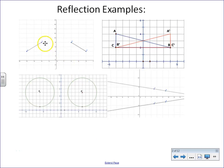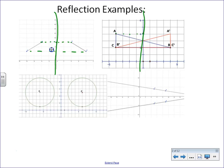Here are some examples of reflections. In the first example, we are reflecting across the y-axis. The points are equidistant from the y-axis. In the second example, we're also reflecting across the y-axis. Point A is 4 units from the y-axis, and A prime is also 4 units from the y-axis. Notice B and B prime are the same number of units away, same as C and C prime. In the bottom left example, we have circles being reflected across the y-axis — every point is equidistant from the y-axis.